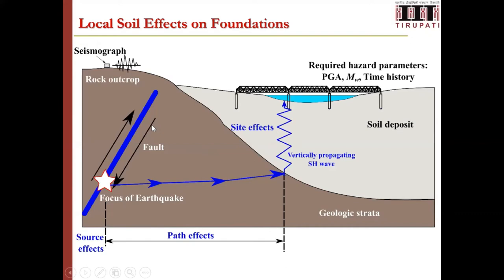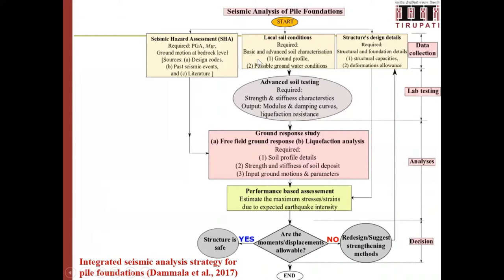A typical picture representing local site effects shows that an earthquake generated at a focus travels to the site, then from the bedrock it travels upward and affects the structure. We need to account for all these effects when analyzing any structure for seismic resistance — including how surface earthquake waves travel from the source to the site and through the soil to the structure.